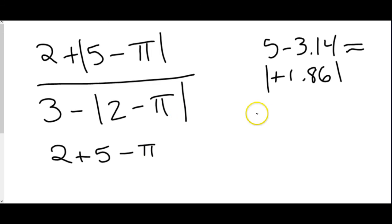So then I look at the other one, 2 minus pi. 2 minus pi is going to be negative something, negative 1.14. And that one you would have to change.